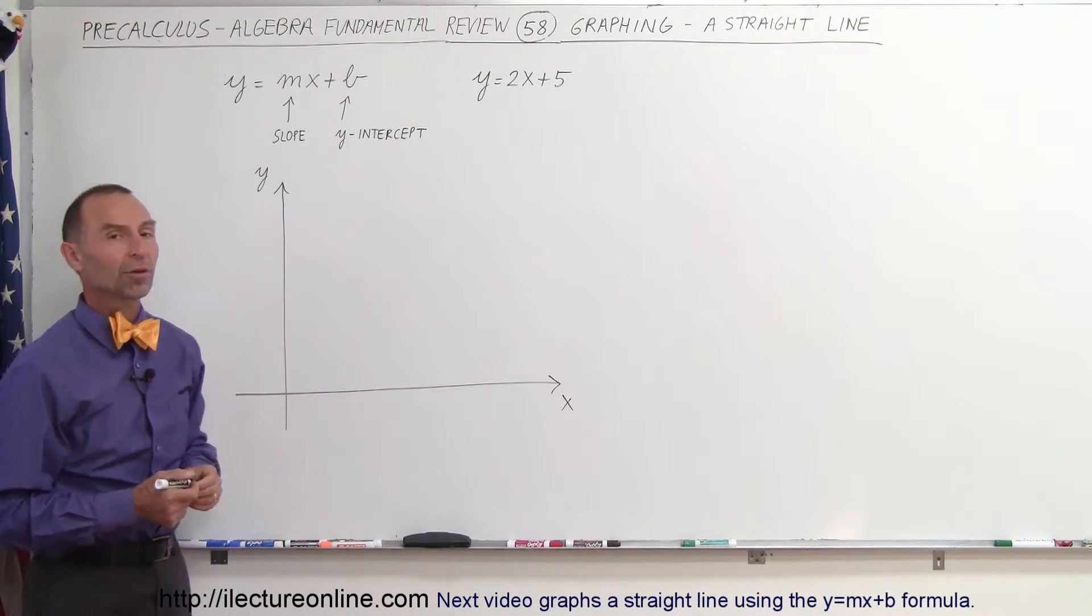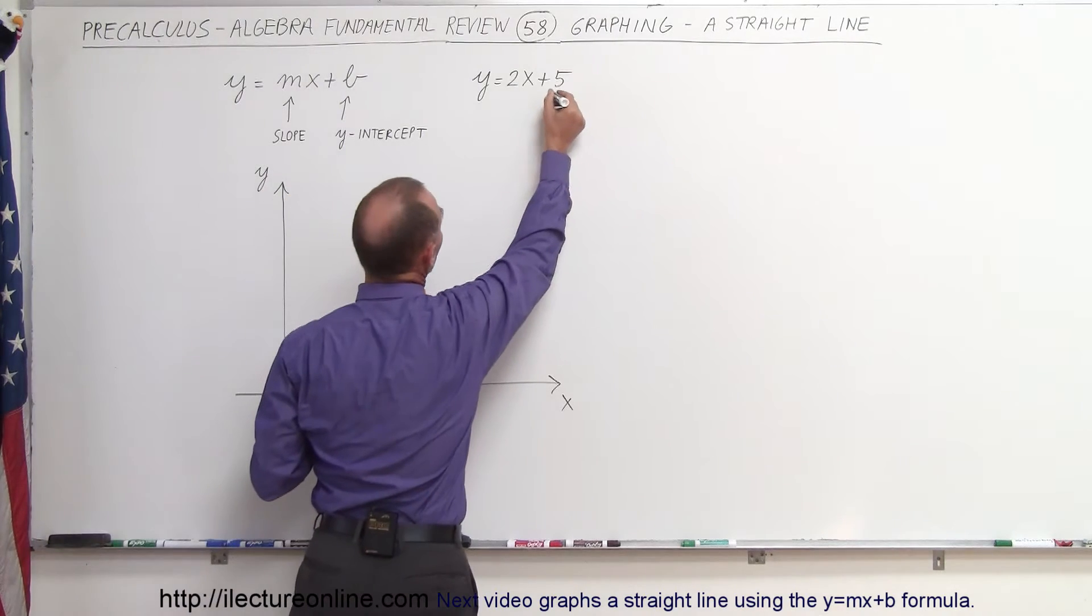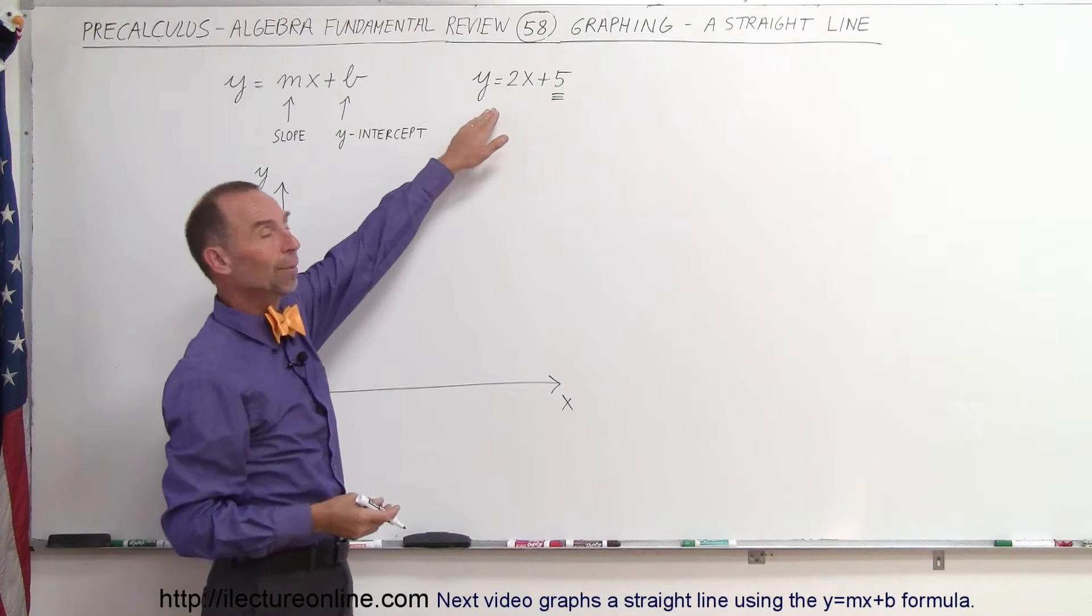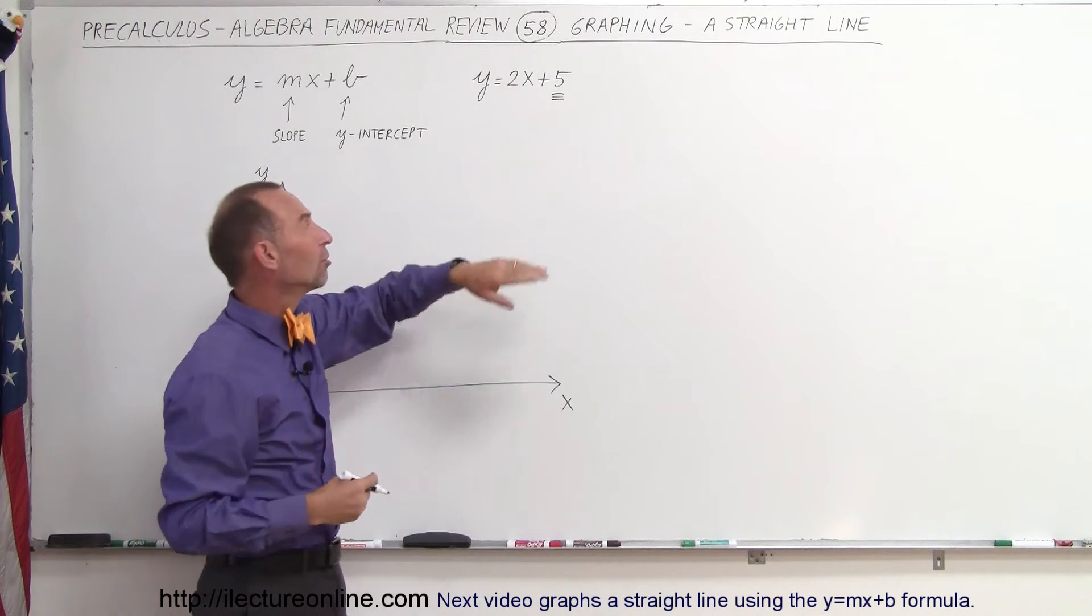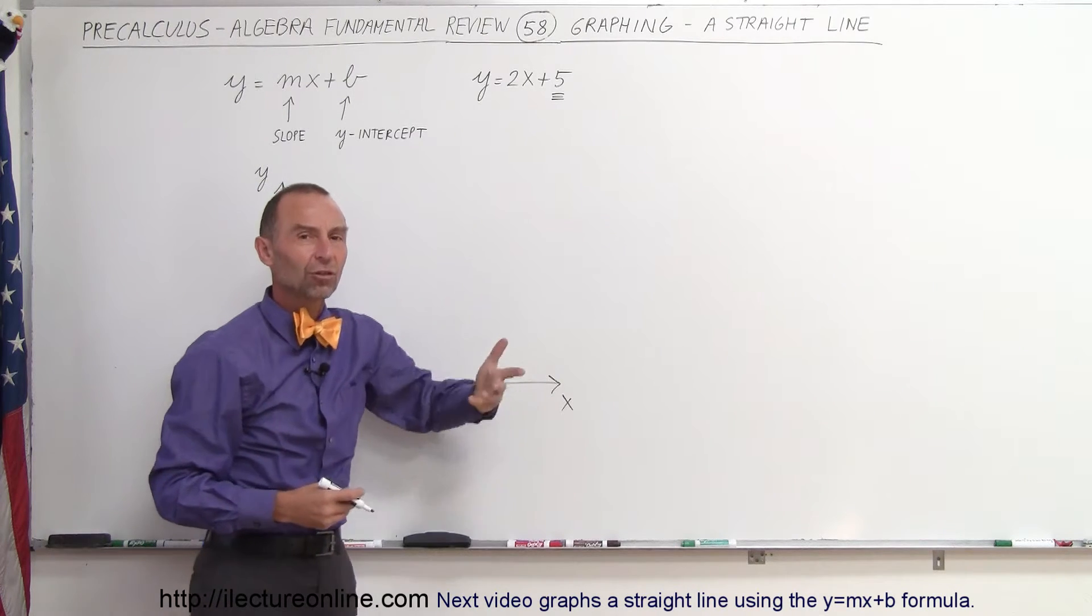For example, y equals 2x plus 5. The way we graph that is we first find the y-intercept by looking at this number. And of course, what if the equation is not in this format? Well then you want to change the equation until it looks like y equals mx plus b before you try to graph it.